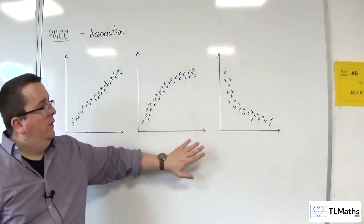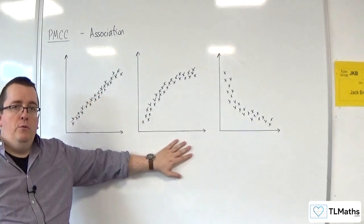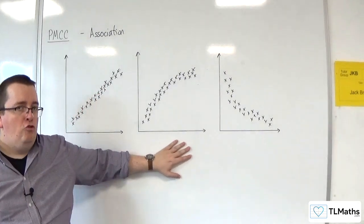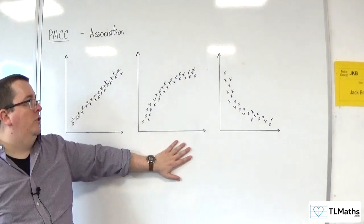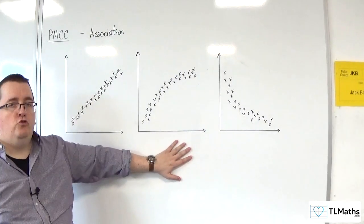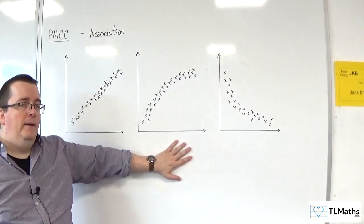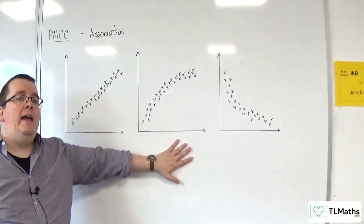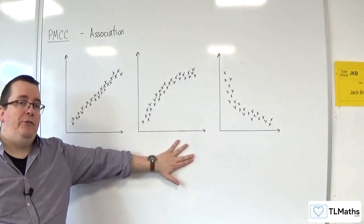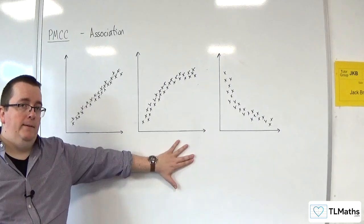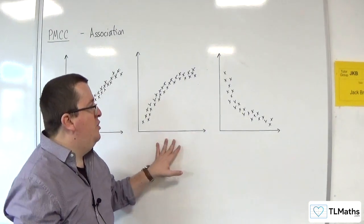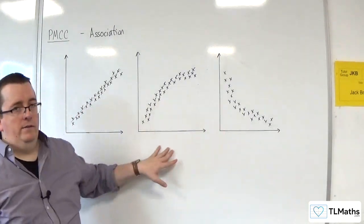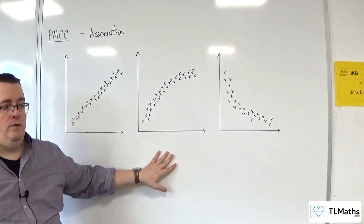Whereas you can have data like these, which don't appear correlated because they are not close to a straight line, but they can still be associated. This is non-linear association.